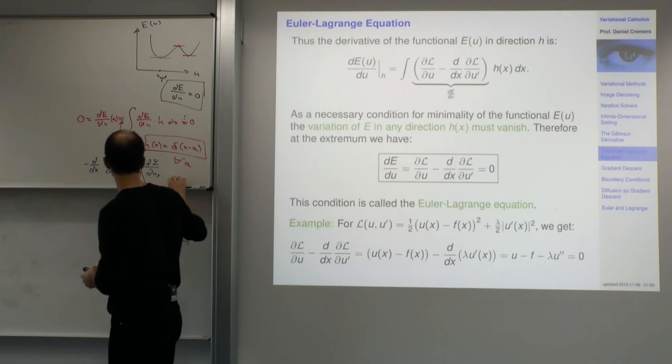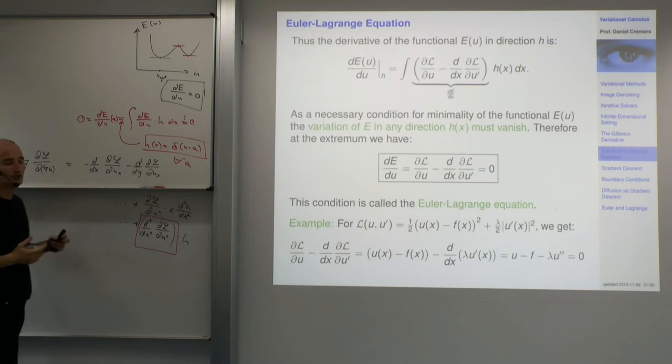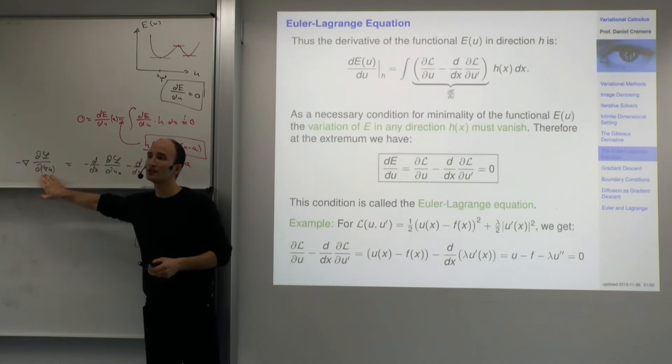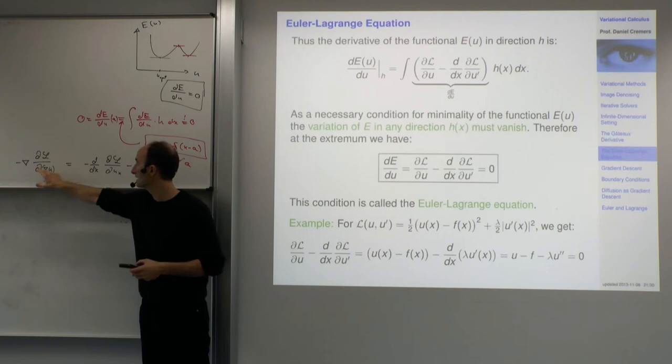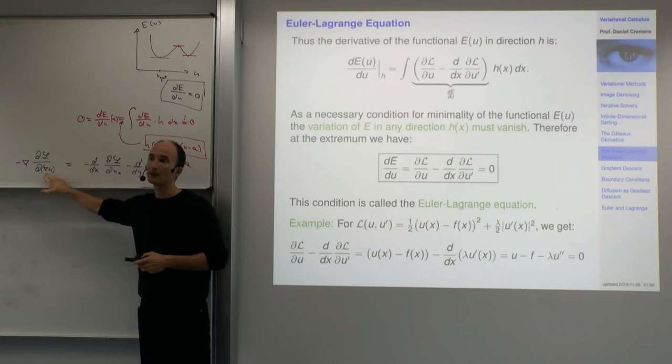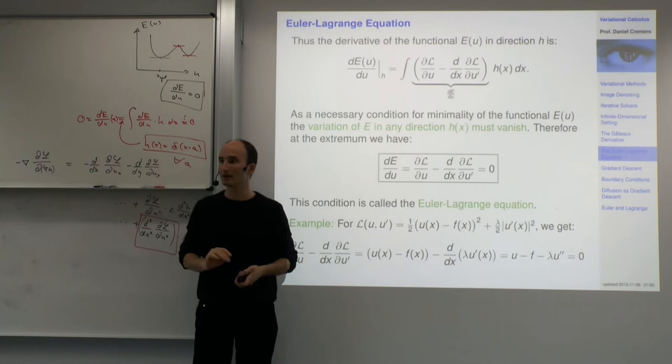Some people write this more compactly as minus nabla of dL by d nabla u. There are different notations, though they can be confusing when you try to actually calculate things, since derivatives with respect to a vector have specific rules. If in doubt, just go component-wise — that way you cannot make a mistake.